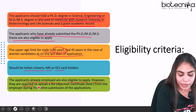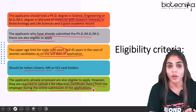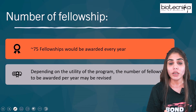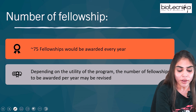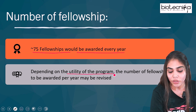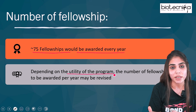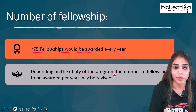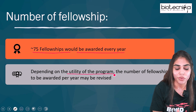Employed applicants are required to upload a NOC from the employer during the online submission of the application. That's all about the eligibility criteria. Now, the total number of fellowships awarded for DBT-RA is 75 every year, but this is revised depending on the utility of the program — it may be increased to 80 or 85, or decreased to 65 or 70 depending on funding constraints.